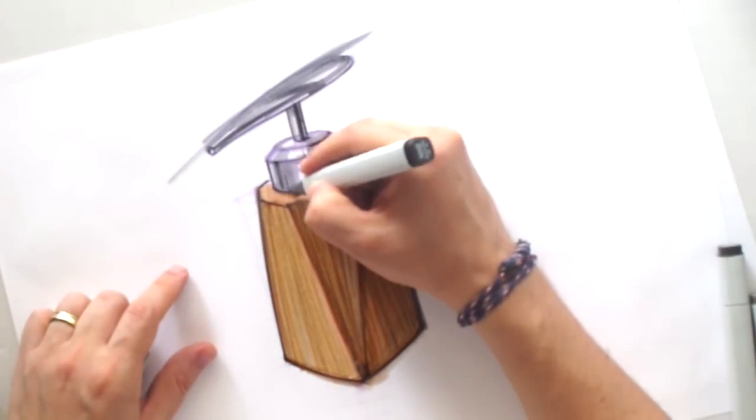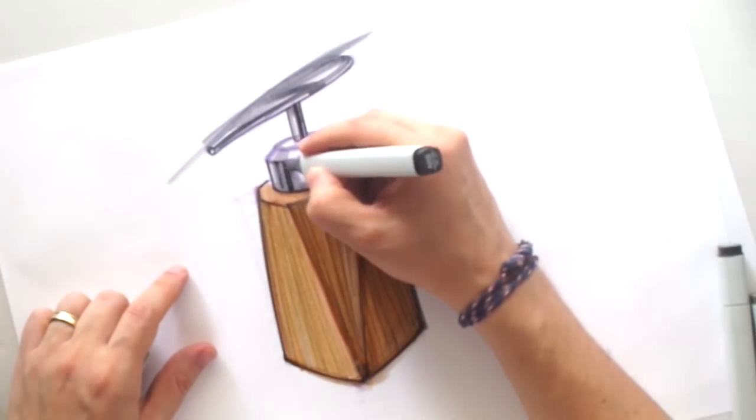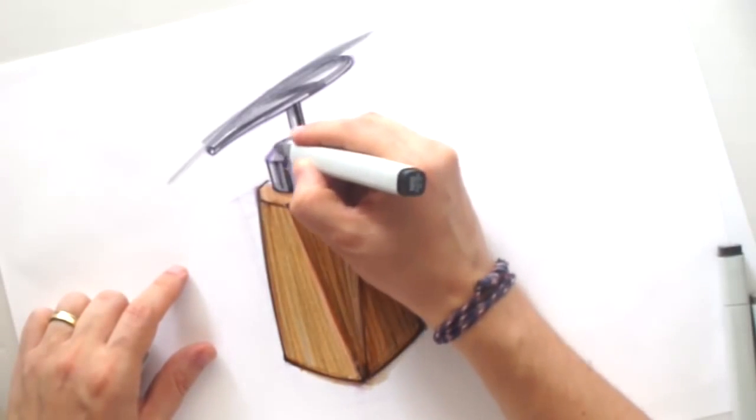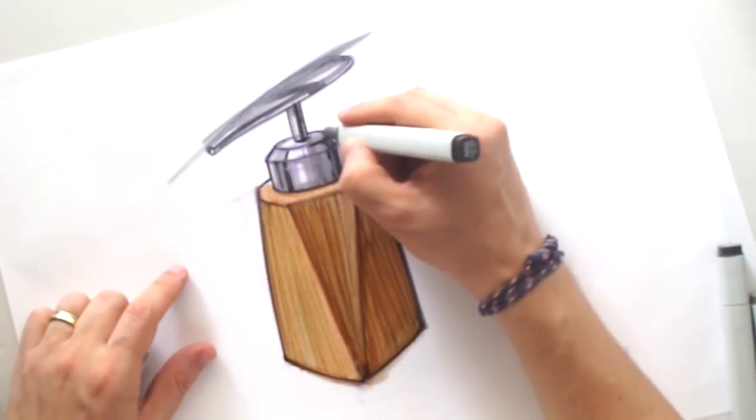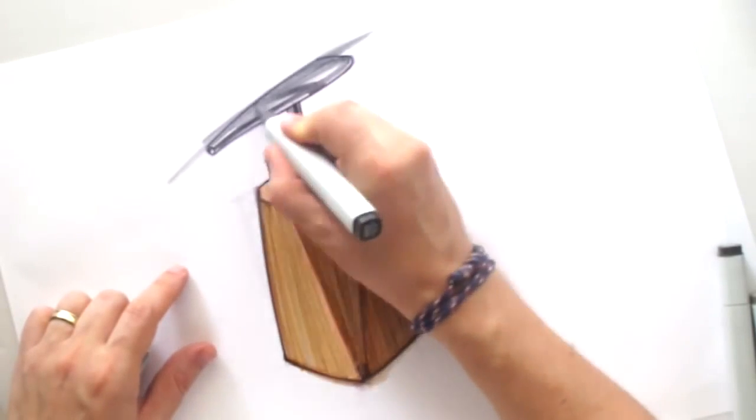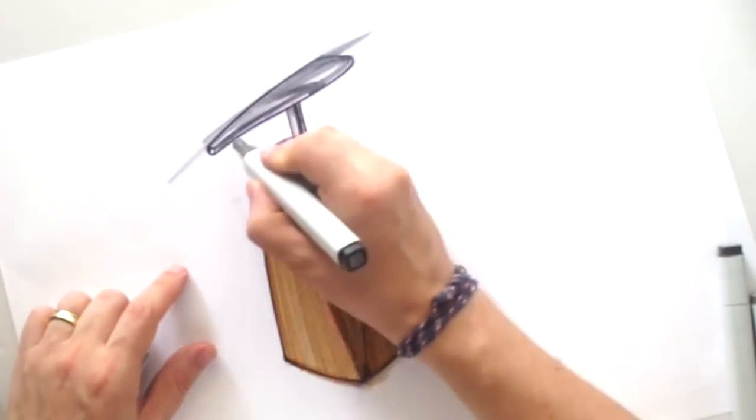By the way, for those renders, at this moment I'm using the Copic paper, A3 paper. It's quite good for blending, mixing the markers.